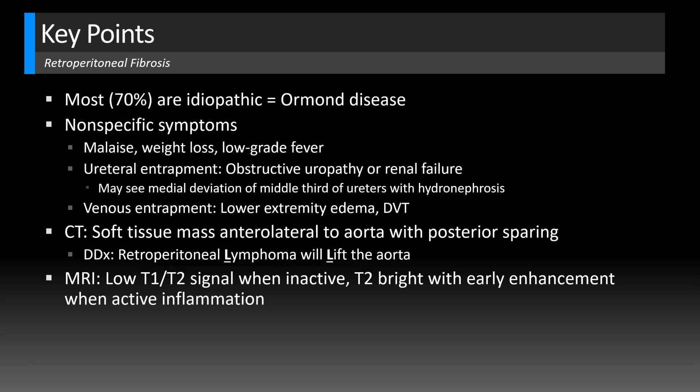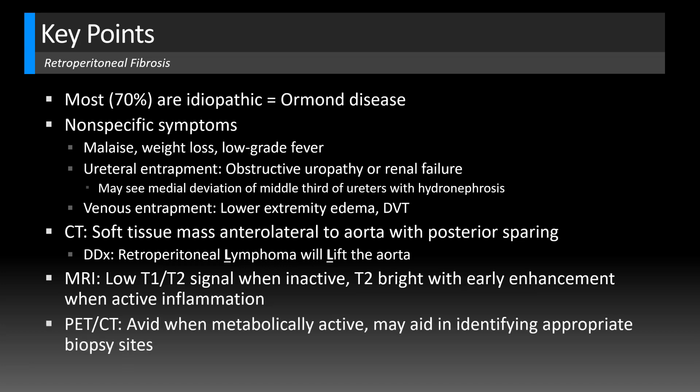On MRI, typically when the disease is inactive it will look like fibrous tissue — low T1 and low T2 signal. But when it's actively inflamed, it will be T2 bright with heterogeneous early enhancement. On PET-CT, metabolically active areas will be avid, and that can actually aid in identifying appropriate biopsy sites.